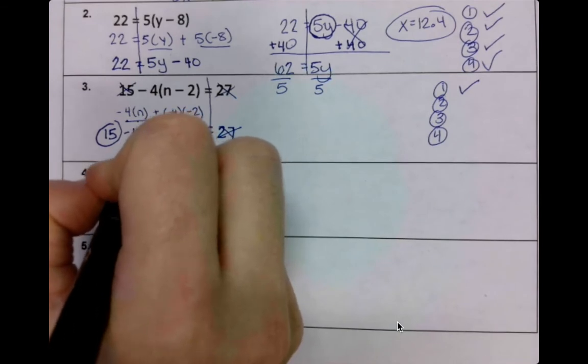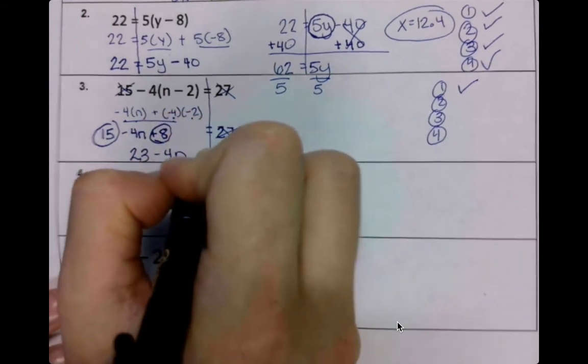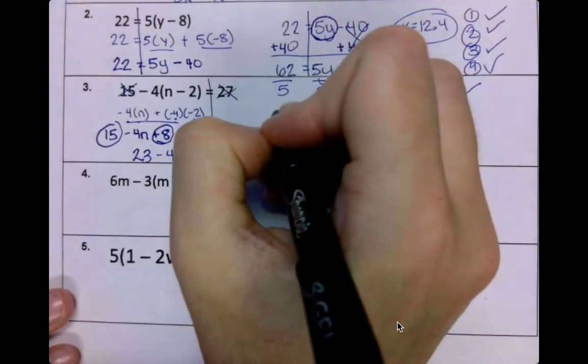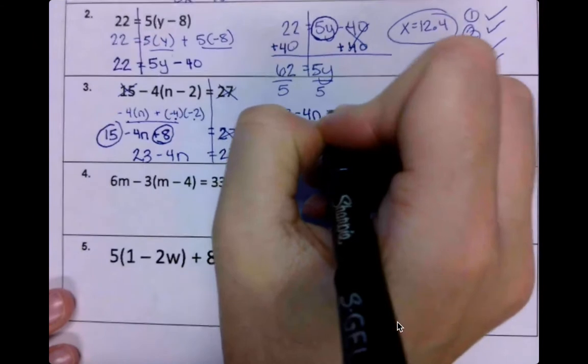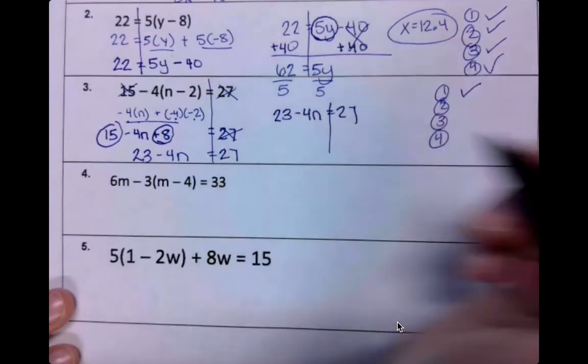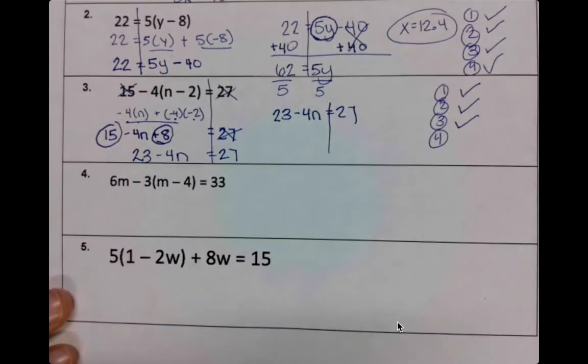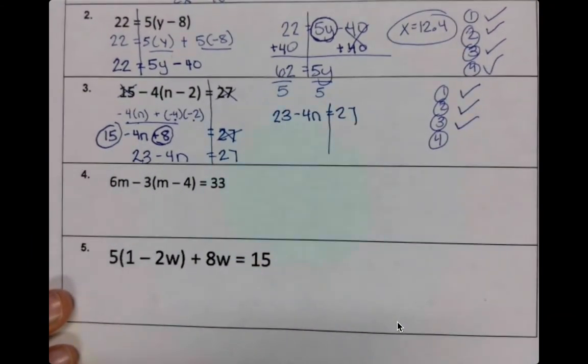So I have 23 minus 4n, and then bring down your 27. Okay, so we did our distributing and we did our combining like terms. Now we're just solving a two-step equation.